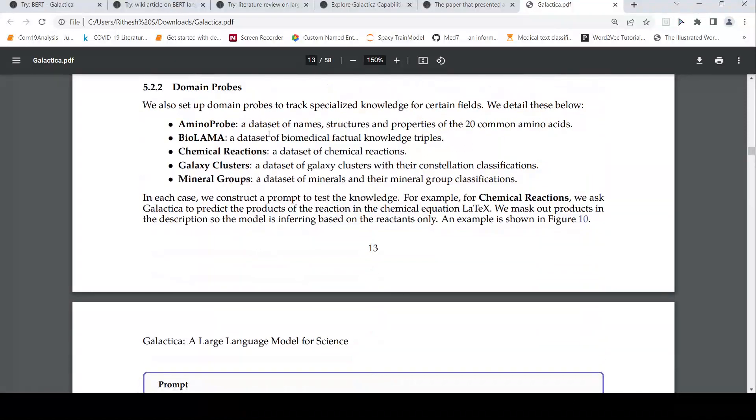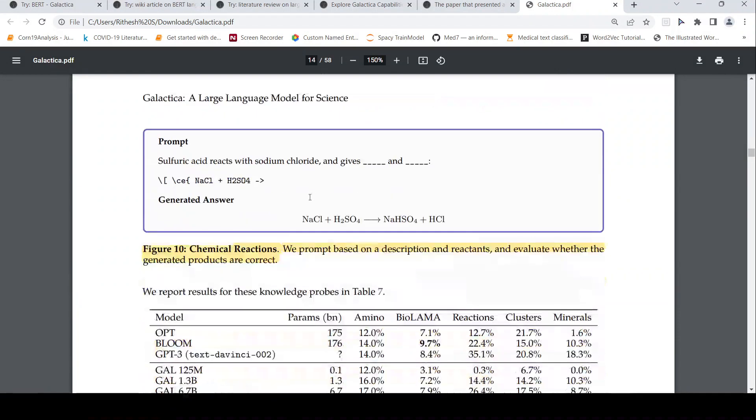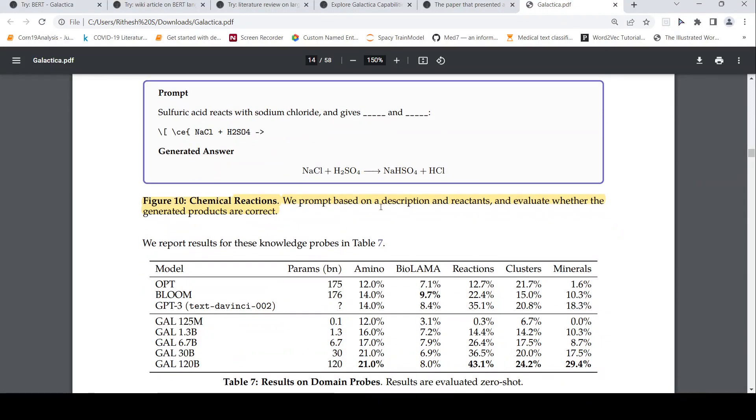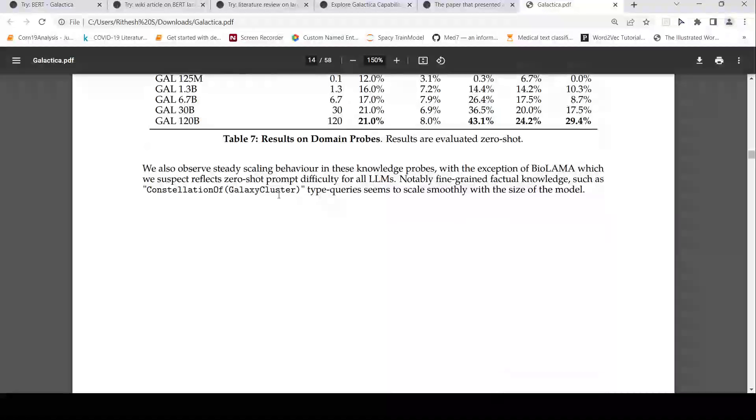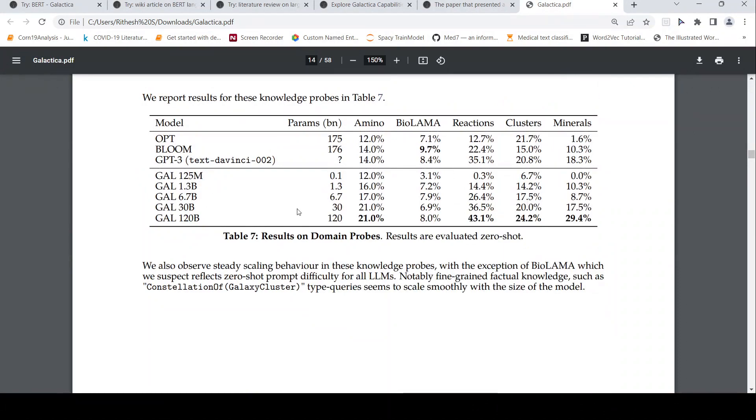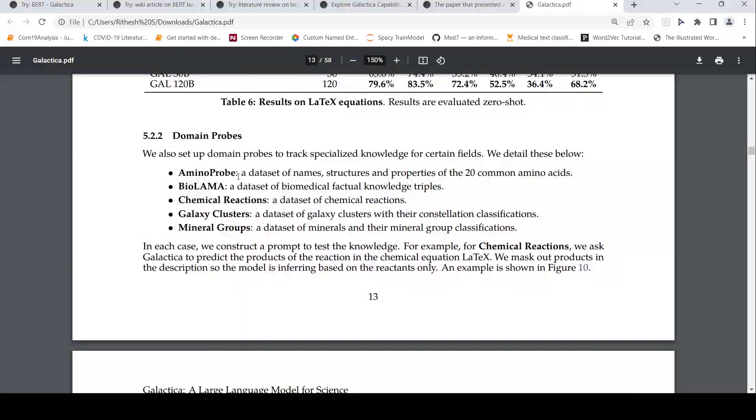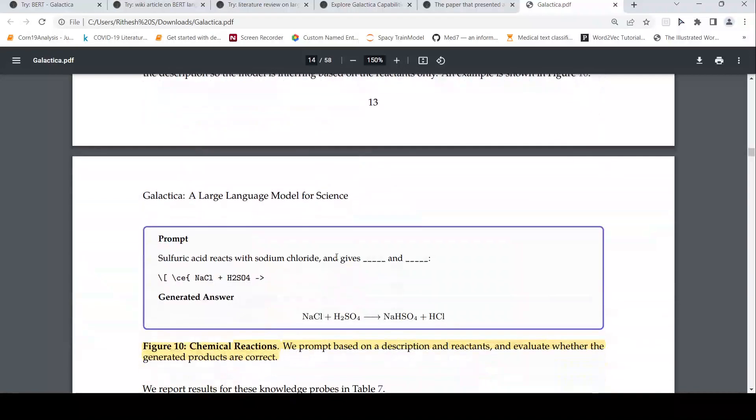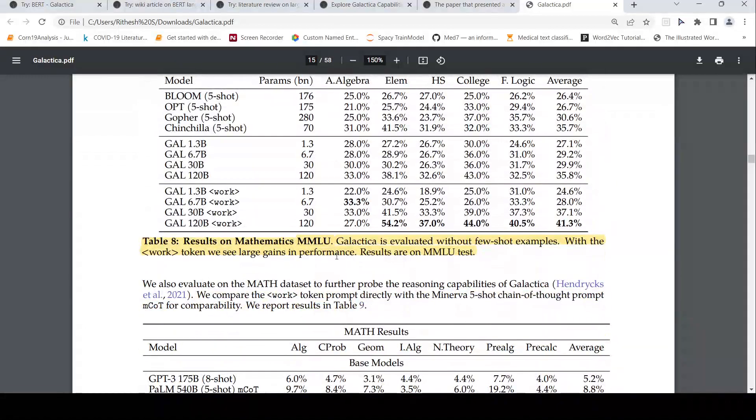Then you have these domain probes like amino probes, a data set of names and structures and properties of 20 common amino acids. So here you also have something called chemical reaction probes. For example, sulfuric acid reacts with sodium and chloride and gives. And then it gives the generated answer as this. We prompt based on description and reactants and evaluated with the generated products are correct. This is the evaluation of that. This is the evaluation on the domain probes and these are the kind of results which come with zero shot. This is cool.